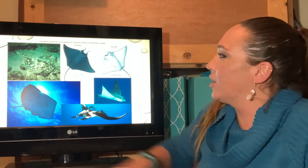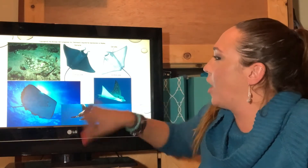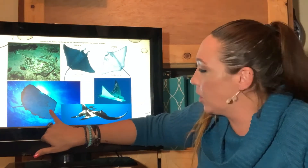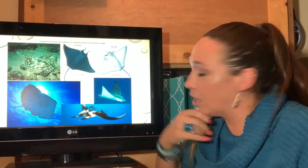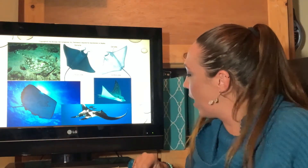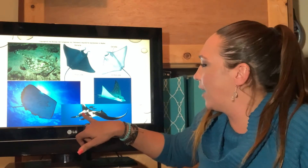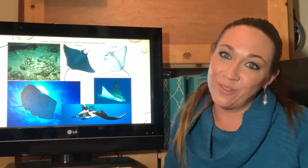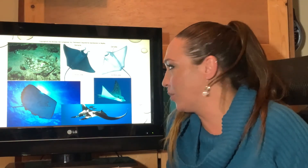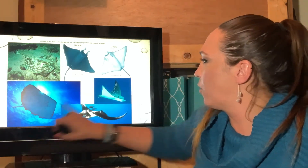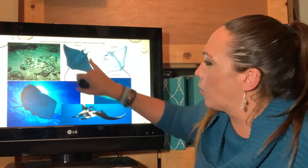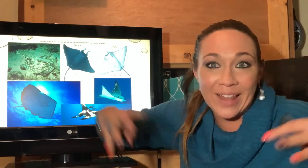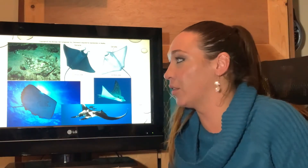Looking at ray images: bottom-dwelling rays have round, flat bodies; pelagic rays like spotted eagle rays and manta rays have longer, pointed wings. The gills and mouth are on the underside, and you can see the small nostrils used for hunting by scent. Body morphology indicates habitat — wide and round means bottom-dweller; long, pointed wings suggest pelagic behavior.